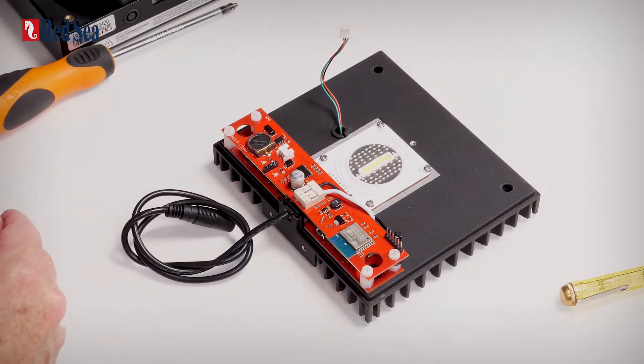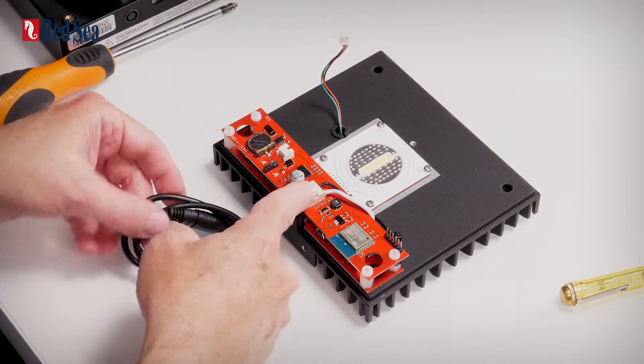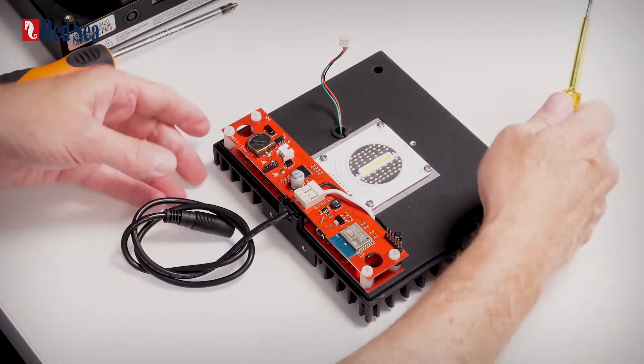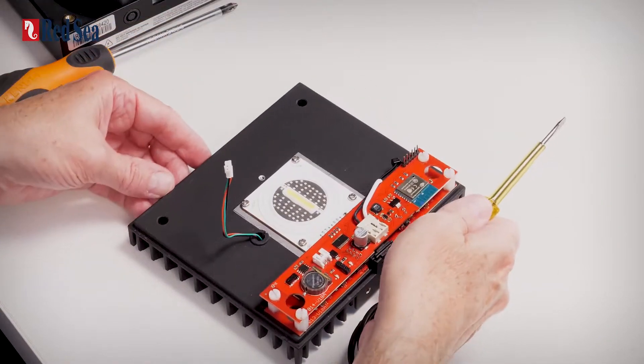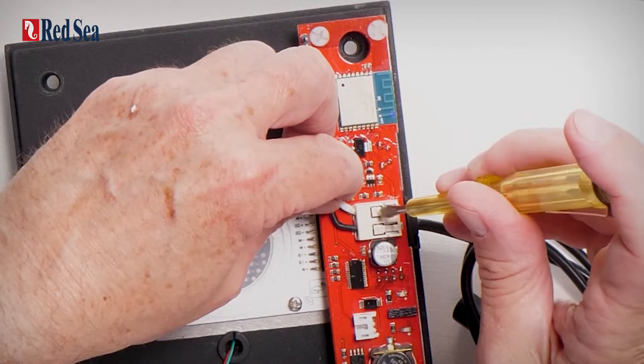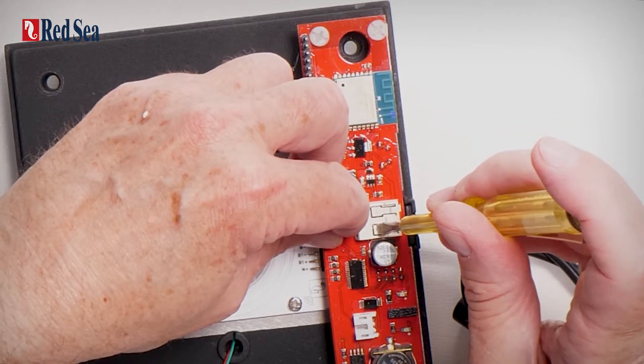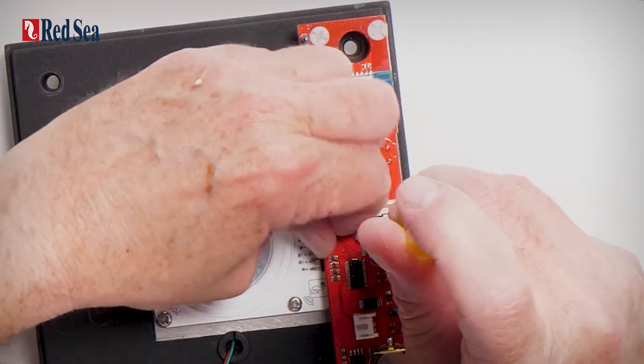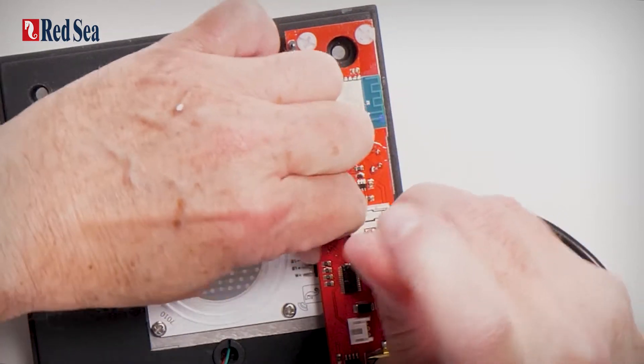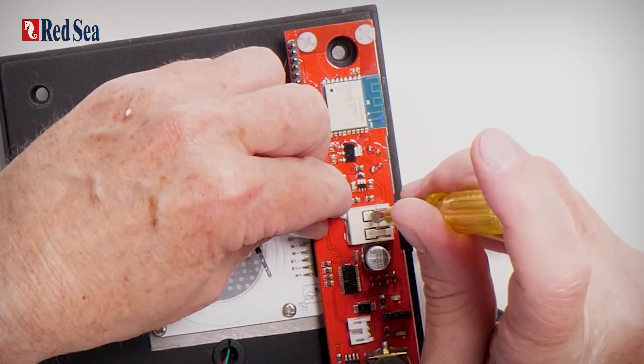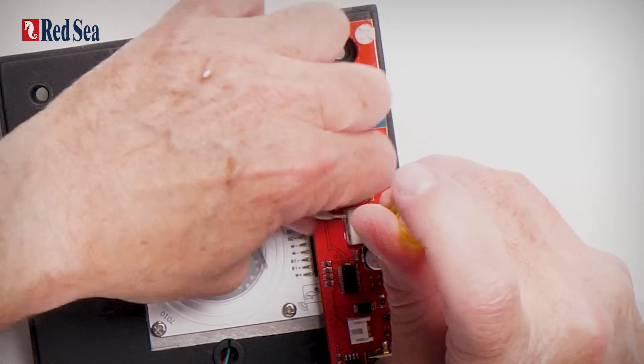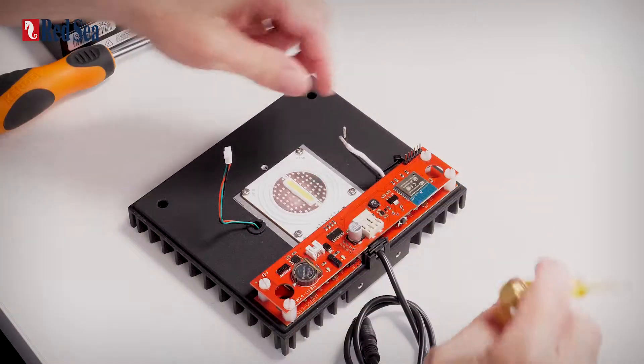The next thing we need to do is to disconnect the DC cable. And this is done with a flat head screwdriver, pressing down first of all on the black wire. And pulling it out and again on the white one. And that is now released.